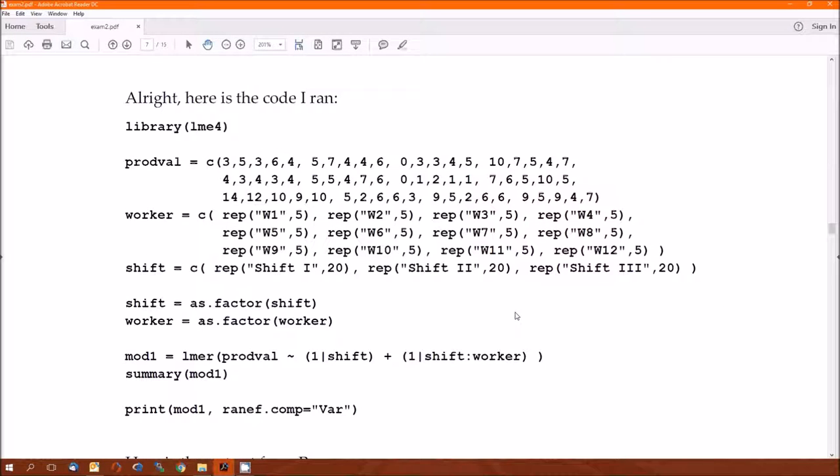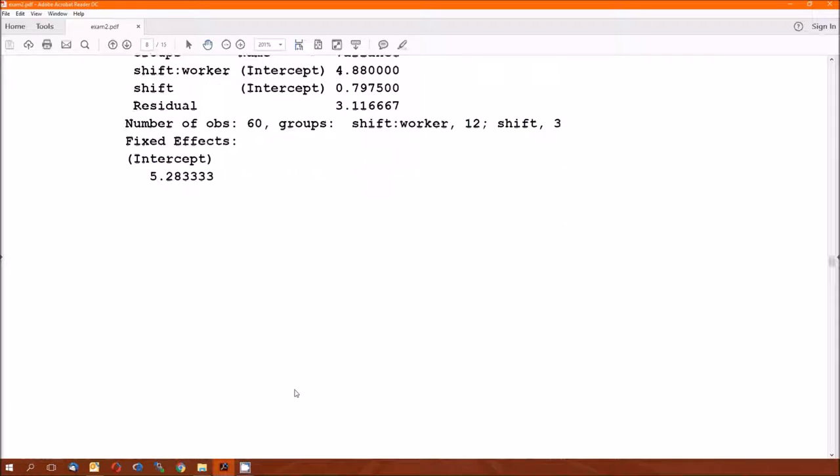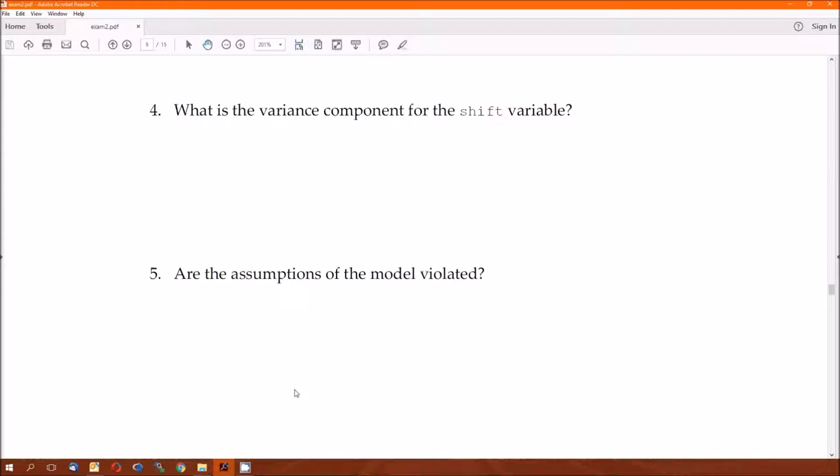And are the assumptions of the model violated? Well, I didn't even test the model assumptions, so there's no way we can tell. If we go back here to the actual code, I just put in the data, fit the model and gave us a summary of it and got the variance components. That's all I did. Didn't test any assumptions. I think everybody got five right. That's the end of the R part.